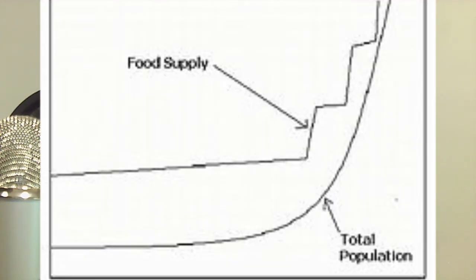The Cornucopian theory holds that Earth has an abundance of resources and they can never be used up. Neo-Malthusianism is a theory built upon Malthus's idea of overpopulation. It takes into account two factors Malthus did not: population growth in lesser-developed countries, and the outstripping of resources other than food.